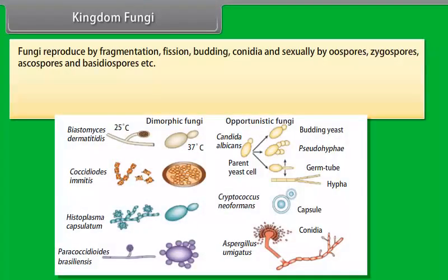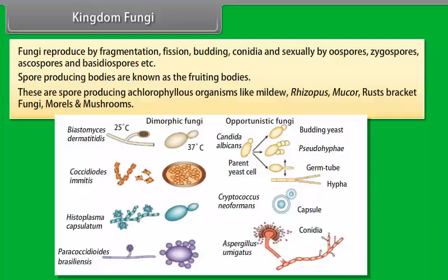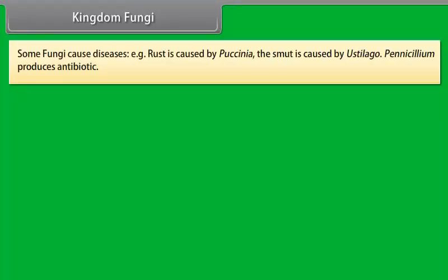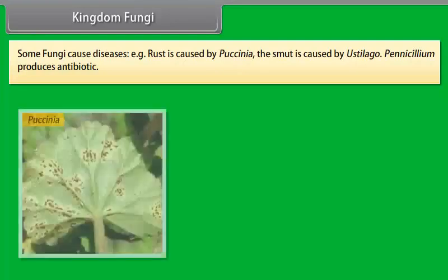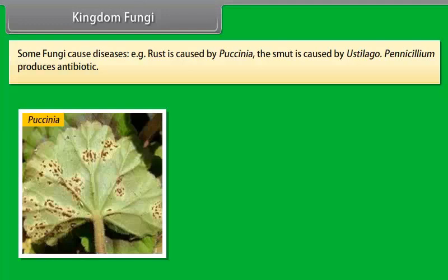Kingdom Fungi. It is the kingdom of multicellular heterotrophic decomposers. For example, yeast, Mucor, Agaricus, etc. These heterotrophs may be saprophytes or parasites. A fungus occurs in soil, air, water, and as parasites on plants as well as animals. These are non-chlorophyllous organisms. Their body consists of hyphae. They are unicellular, for example yeast, which is used to make bread and beer. The cell wall of fungi consists of chitin and polysaccharides.